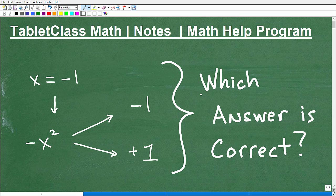Okay, let's talk about which answer is correct. The problem is the following, and here we have two answer choices. So when x is equal to negative 1, what is the value of negative x squared?